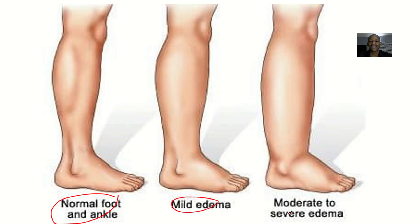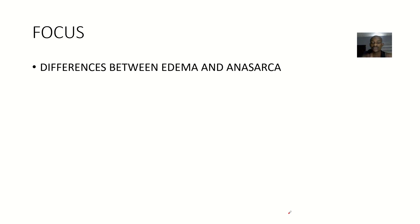Edema normally occurs in the lower extremities — the hands, the legs, and all that. When edema is now spreading to other parts of the body, generalized edema, that's when we say it is becoming anasarca. I'm going to give you a breakdown of the differences between edema and anasarca.